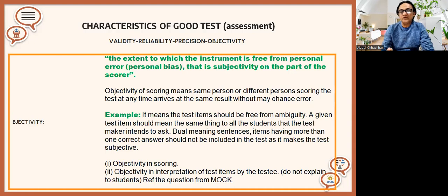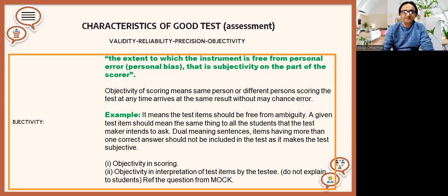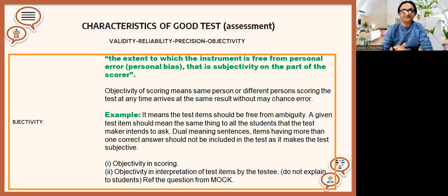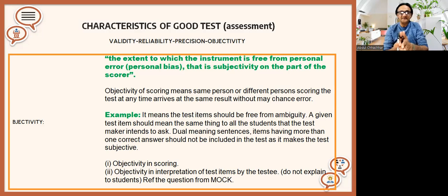Objectivity mainly refers to errors. For example, during the test while you are invigilating the class, if a student asks you a question and you explain it to only that one student but not to others who ask the same question — that is an objectivity issue. Similarly, if there is an error in the questions you have designed, that is also an objectivity problem.